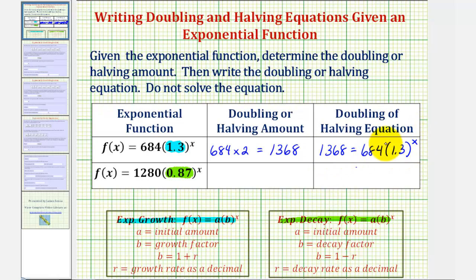So if we find the value of x to solve this equation, we'll determine the input that would produce an output that's twice the initial value.